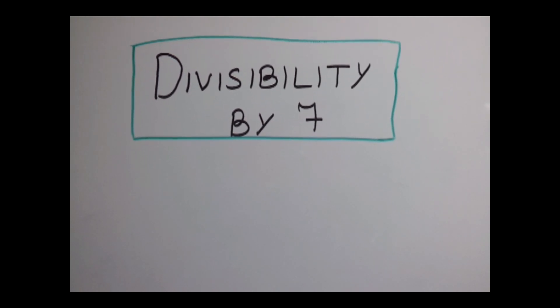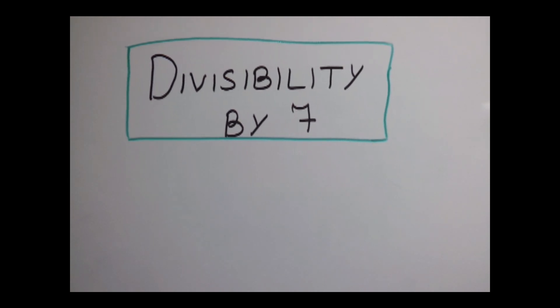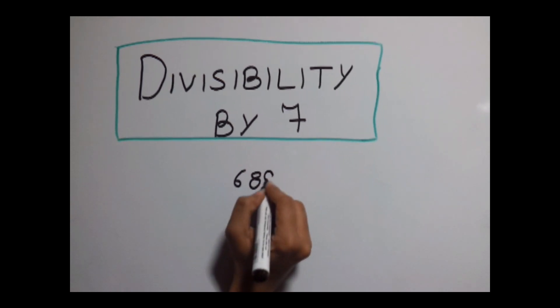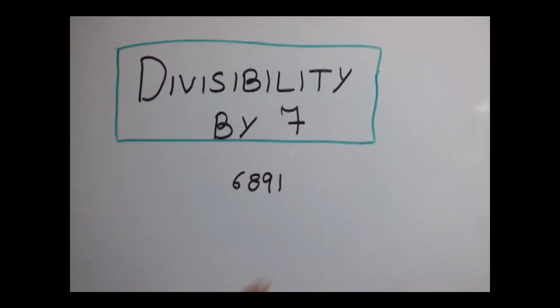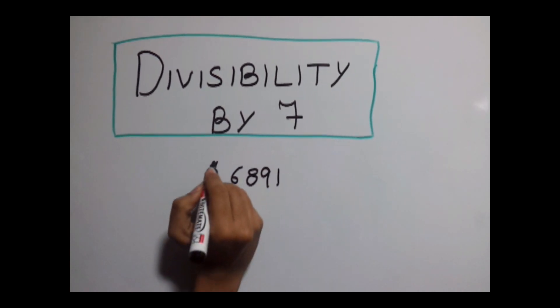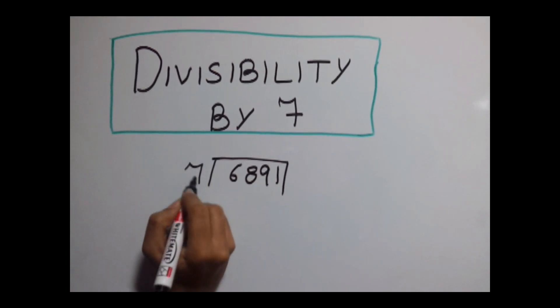First, let us check the normal procedure of checking the divisibility of a number. Let's have 6891. Now to find out whether this number is divisible by 7 or not, we would normally divide this by 7.